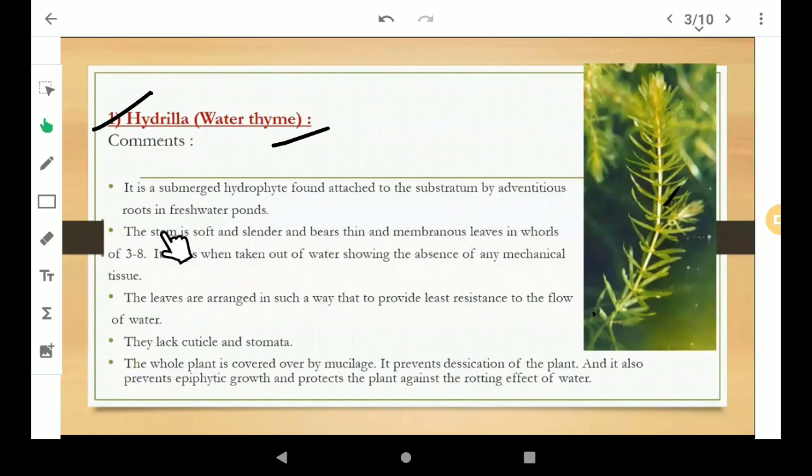In freshwater plants the stem is soft. Here you can see the stem is so soft and slender, meaning thin, and bears thin and membranous leaves in whorls of 3 to 8.